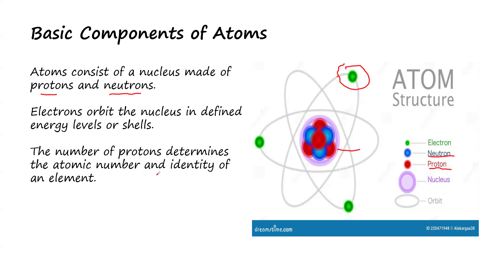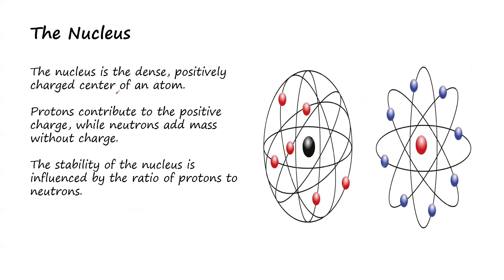So the number of protons determines the atomic number and the identity of an element. The proton number determines the atomic number of an element. Let's say we have element X, and this element X has an atomic number of 10. So since you have atomic number as 10, this 10 means the proton number of the atom. The proton number is the same thing as the atomic number of an element. So this proton number is what determines the atomic number of the element as well as the identity of the element itself.